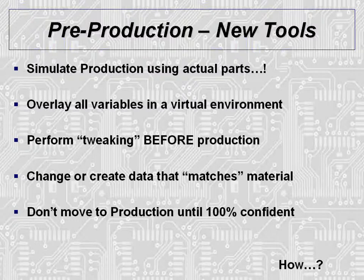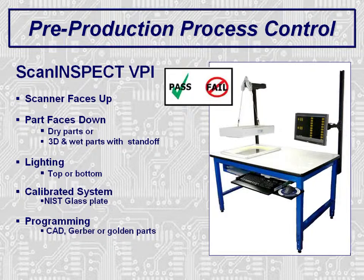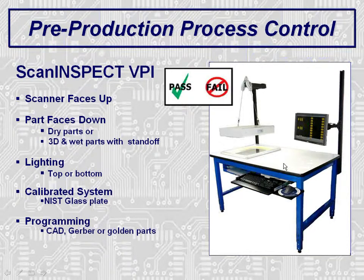Now you may ask, how is this done? A revolutionary new tool from ScanCAD International: ScanInspect VPI, Virtual Product Inspection. The VPI system is a table-based system with a high-resolution scanning system located on a shelf below the table surface, so the scanner surface is flush with the tabletop. This allows for scanning very large objects, such as stencils and frames.